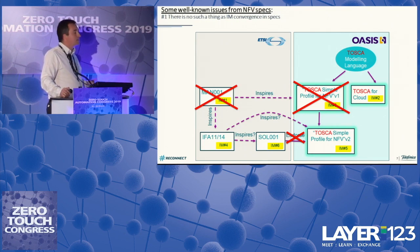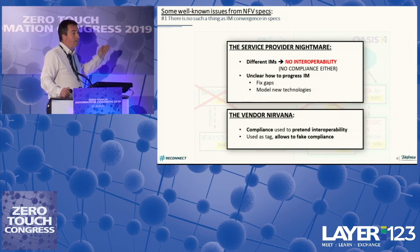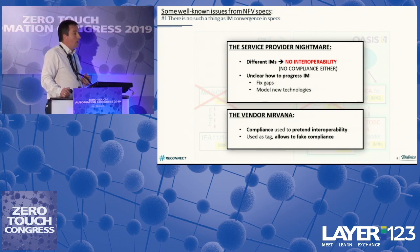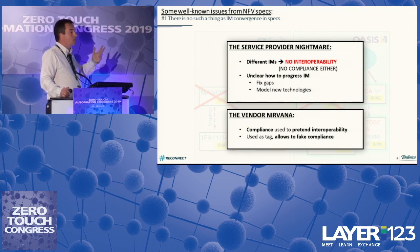How can you expect interoperability between solutions from different vendors if everyone is adding proprietary extensions? We have spoken with many service providers and even vendors who acknowledge this is a problem, but they still continue to sell TOSCA as the magic word that will solve all our problems. The issue is that there is no way to have real interoperability — not even compliance. Your TOSCA is not the same as the other vendor's TOSCA.